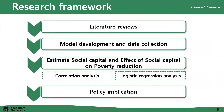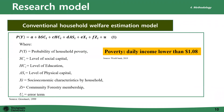The research framework is as follows. This slide explains the research model. We developed a household welfare estimation model based on the World Bank SEIQ model. The dependent variable of this model is poverty, based on household income. Other explanatory variables consist of social capital, human capital, physical capital, and socioeconomic characteristics. Lastly, community forest membership was included.